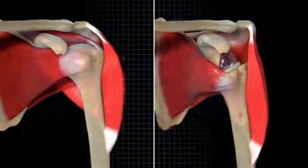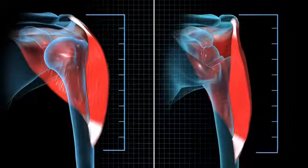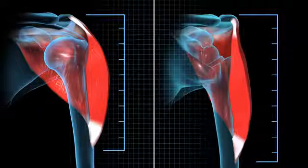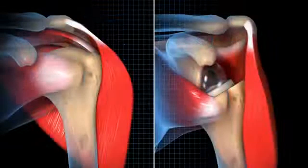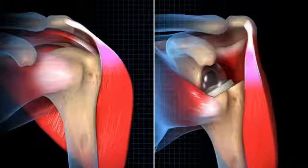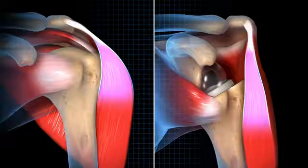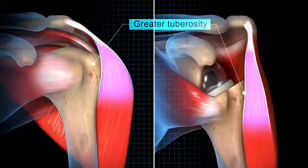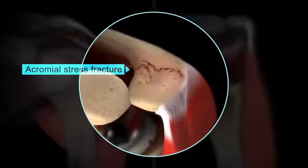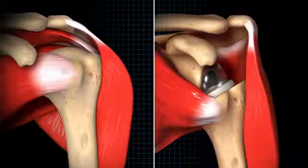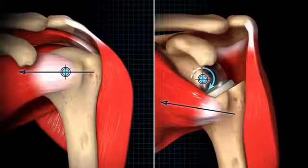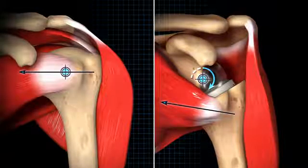Inferiorly shifting the center of rotation and humerus elongates the deltoid. Deltoid elongation improves muscle tone and has been suggested to increase strength and joint stability. However, deltoid elongation modifies the normal contour, decreases wrapping around the greater tuberosity, and creates cosmetic concerns. Excessive deltoid elongation may lead to acromial stress fractures. Inferiorly shifting the humerus also alters the subscapularis and infraspinatus line of action, increasing their adduction capability at low elevations and counteracting the work of the deltoid.